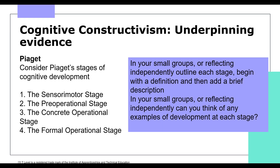Let's take a look at the underpinning evidence. Consider Piaget's stages of cognitive development. He believed that as children's thinking develops from one stage to the next, their behaviour also changes, reflecting cognitive developments. The stages follow a specific order, each occurring after the previous one. Starting with the sensorimotor stage — the first phase — children primarily learn about their environment through their senses and motor activities. You may have seen this in placement when children put things in their mouths.